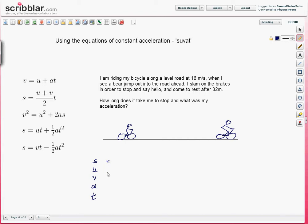So riding along a level road at 16 metres per second. So this here, that's how fast I'm going to start with, that's U. 16 metres per second, so we can put that in here. U equals 16. I slow down, come to rest after 32 metres. That is S, the distance travelled. 32 metres there.